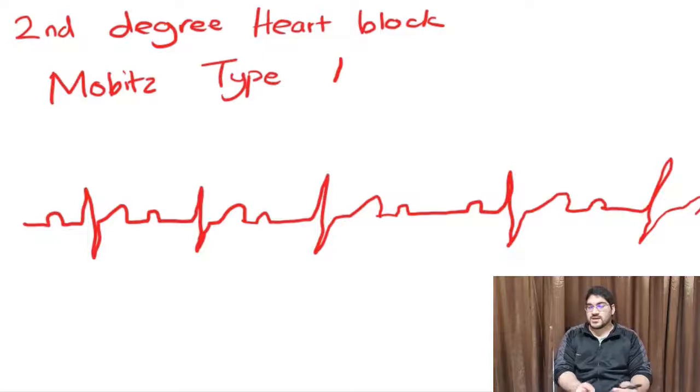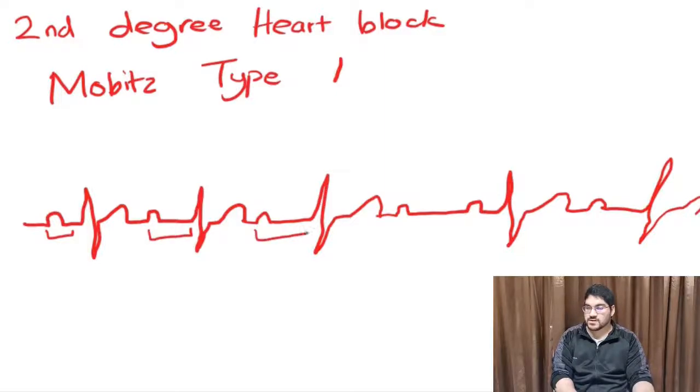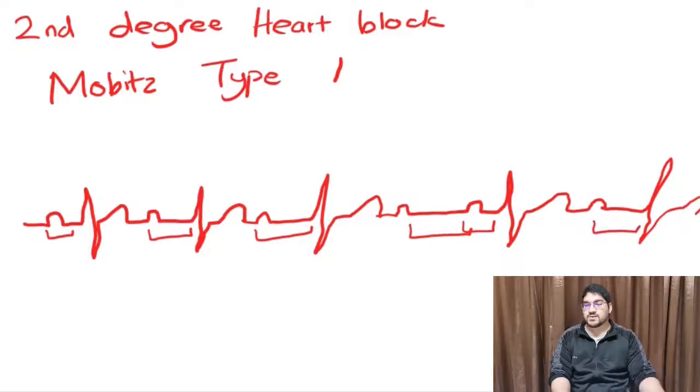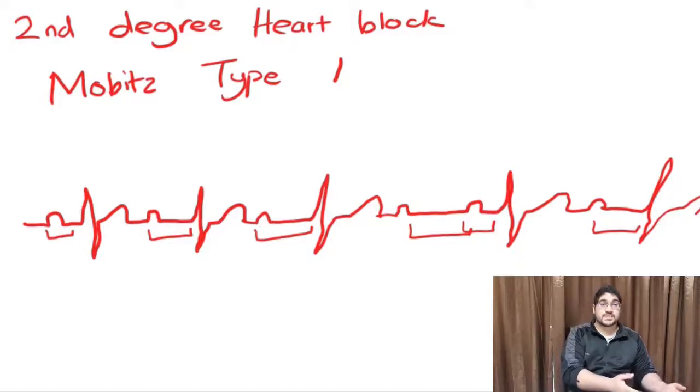As you go on this ECG, you'll see that the P-R interval gets progressively longer and longer and longer until eventually there's no QRS complex, just a skipped QRS, and then all of a sudden the P-R interval starts getting longer and longer again. That's Mobitz type 1. That is predictable. You can see it coming. It goes longer, longer, longer, skipped.